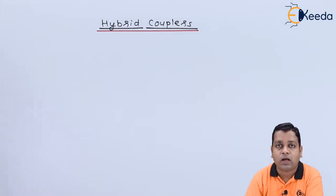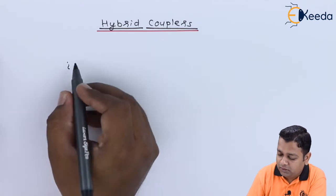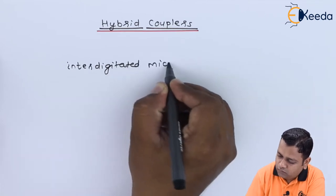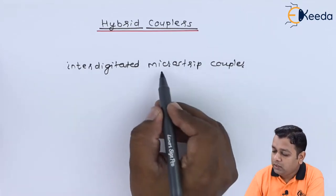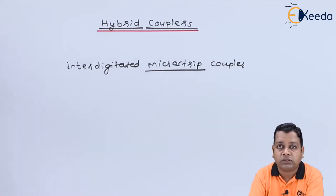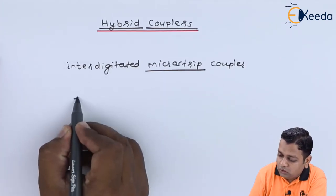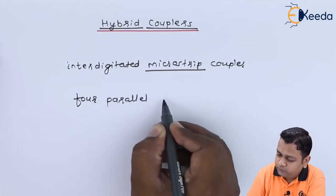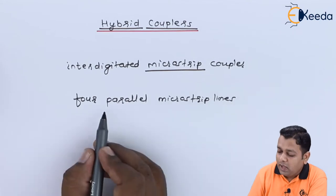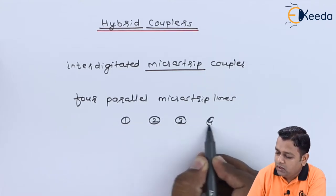Adding more information to the hybrid coupler: a hybrid coupler is basically the interdigitated microstrip coupler. The term 'microstrip' refers to microstrip lines, which are transmission lines carrying energy from one location to another for the microwave signal. There are a total of four microstrip lines, and they are parallel to each other, numbered one, two, three, and four.